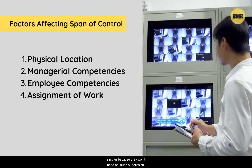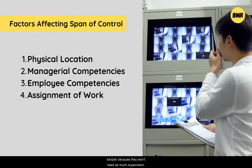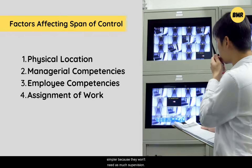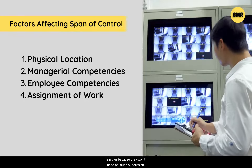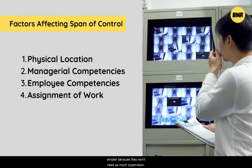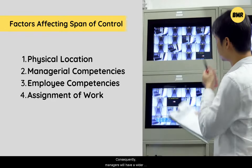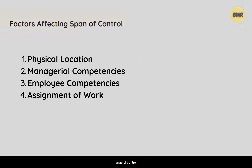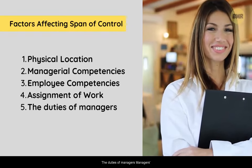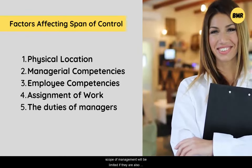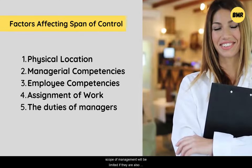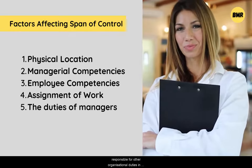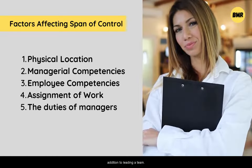Number four, assignment of work: if the tasks given to staff are repetitive and similar, they will be experienced and require less supervision and control, and consequently the range of control will be wider. Number five, the duties of the manager: if managers are also responsible for other organizational duties in addition to leading a team, their scope of management will be limited.